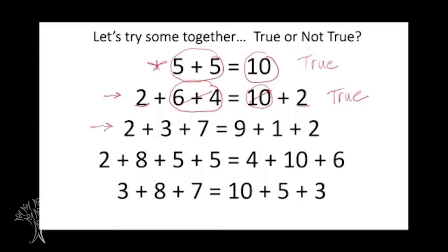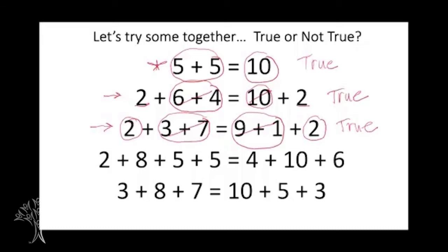Here's another one: 2 plus 3 plus 7 equals 9 plus 1 plus 2. True or not true? Did you say true? When I looked at this problem, 9 plus 1 jumped out at me because I know that's 10. Those two 10s balance out the equation, and then again we have our 2 and our 2. Both sides have the same value.